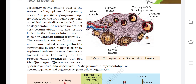Figure 3.7 shows the diagrammatic sectional view of the ovary with blood vessels, primary follicle, tertiary follicle showing the antrum, and the Graafian follicle rupturing to release the ovum. The structure left behind after ovulation is called the corpus luteum.